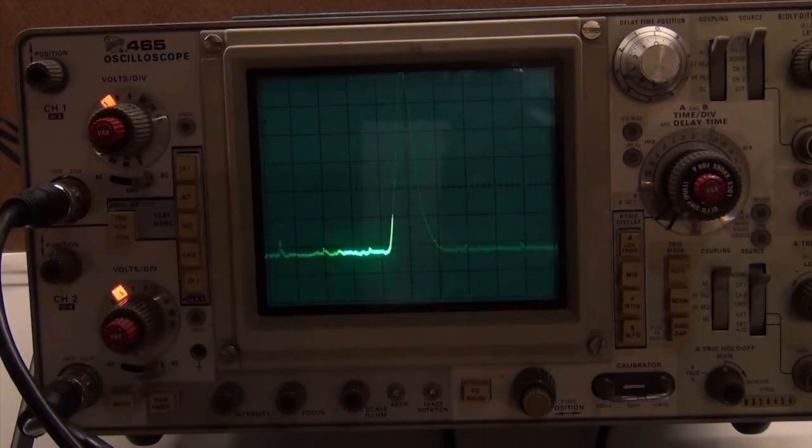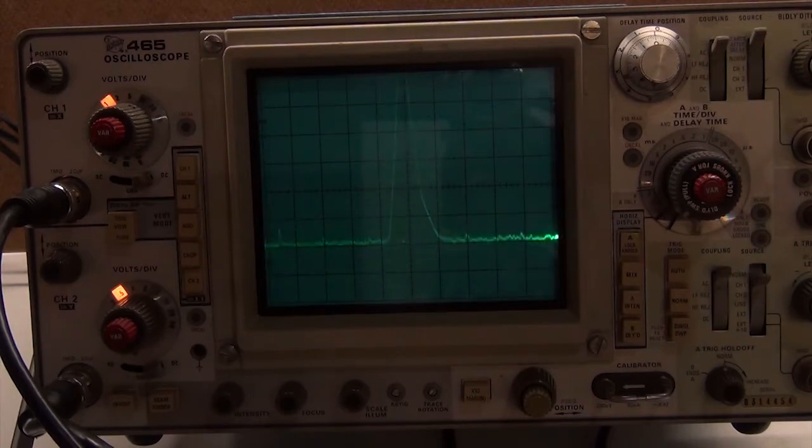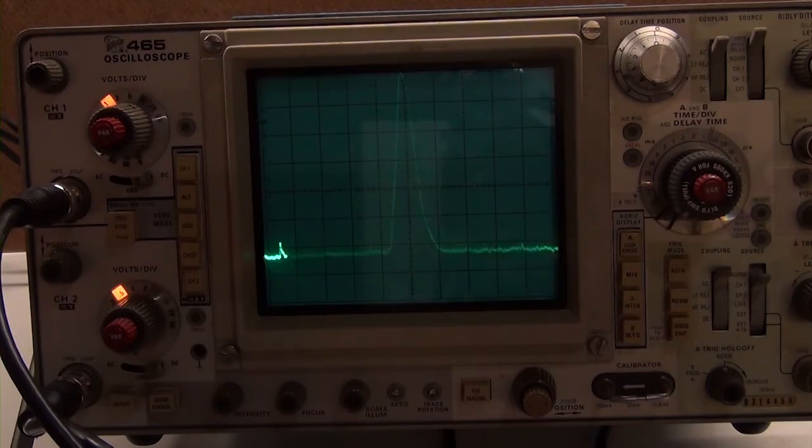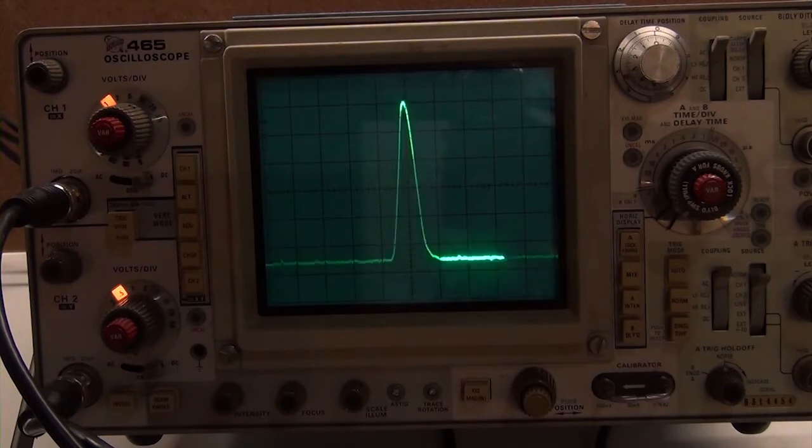But now watch what happens to the noise floor as I crank up the IF gain. As I approach minus 30 dBm at the top, you can see the noise floor comes up and I'm almost out of range on the IF gain control now. If I push it any further, the noise floor really comes up as I overdrive that amplifier. So effectively, I'm struggling to be able to get to minus 30 dBm at the top graticule.